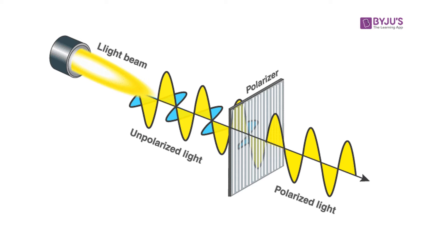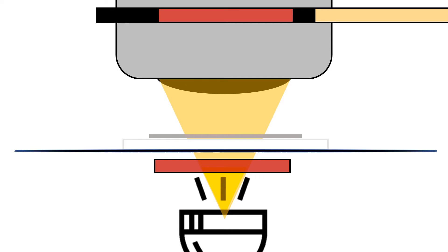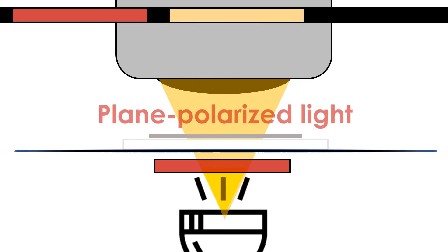Because refraction and vibration of light depends in part on the orientation of a mineral crystal, we can use plane polarized light, cross polarized light, and the rotating stage to observe how a mineral's appearance changes as its crystal is reoriented. If both filters are being used, the light that reaches the eye is cross polarized. If only the lower polarizing filter is in use, we say the light is plane polarized.